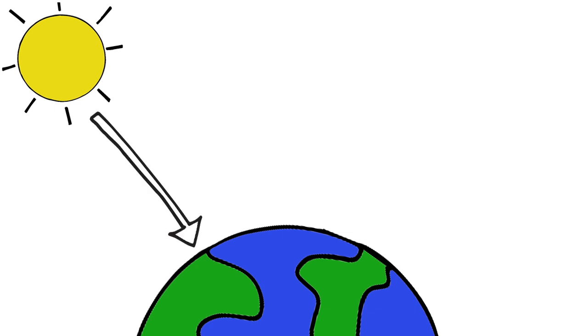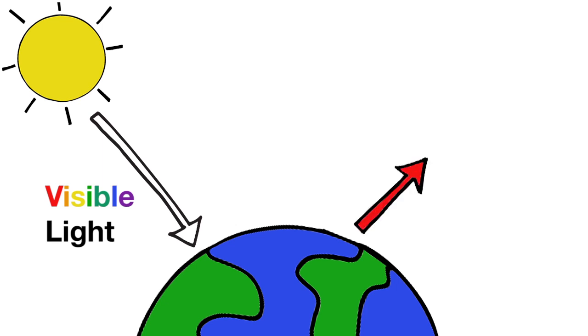The earth absorbs light from the sun, which is mostly visible light. To release that light energy, earth also emits light. But because the earth is cooler than the sun, it emits lower energy infrared light. So, earth's surface essentially transforms most of the visible light it gets from the sun into infrared light.